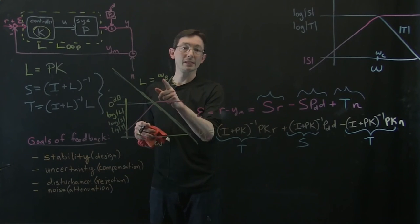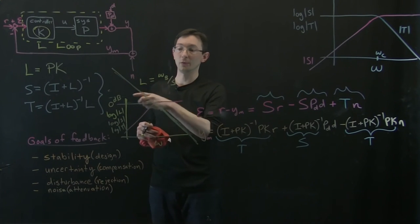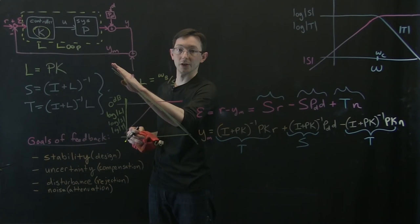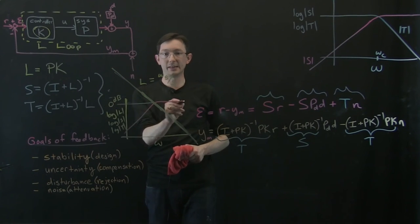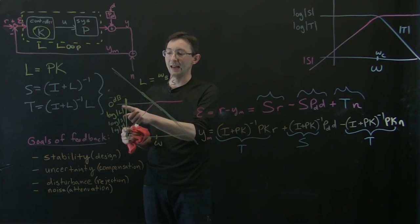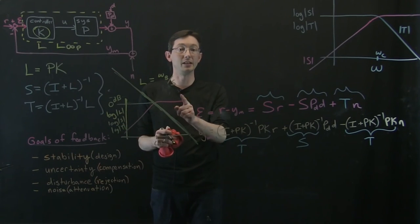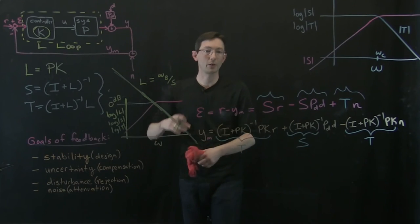So we sometimes define this crossover frequency or our bandwidth as where this loop transfer function, what frequency it is when it hits the 0 dB line. Because that's when we have a trade-off between sensitivity and complementary sensitivity taking place.